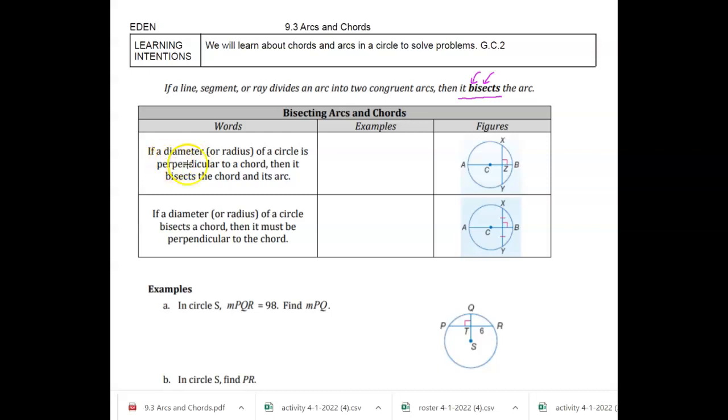So in words, if a diameter or radius of a circle is perpendicular, remember that means to form a right angle, to a chord, then it bisects the chord and its arc. So let's look at this example.